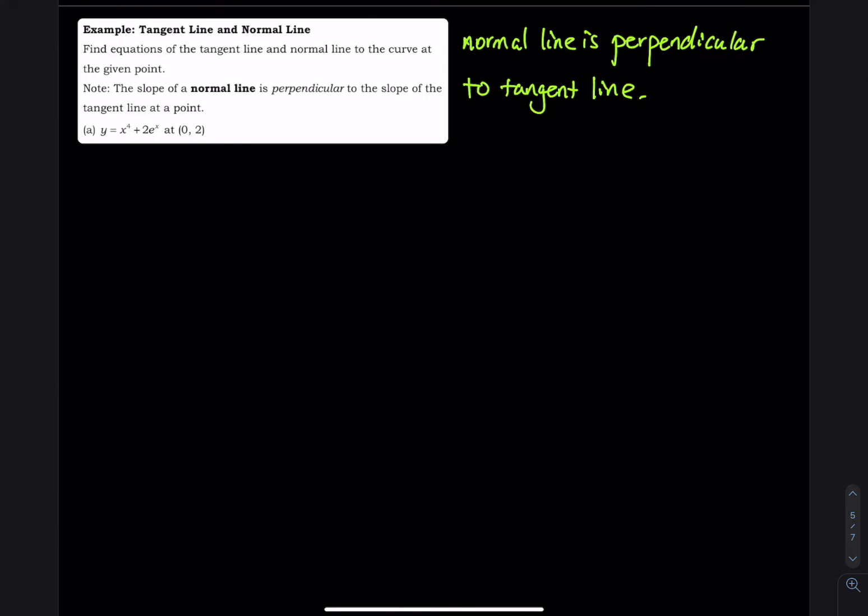In this part, we will discuss tangent line and normal line. I want to find equations of the tangent line and normal line to the curve at a given point. So what is a normal line? The slope of a normal line is perpendicular to the slope of the tangent line at a point.